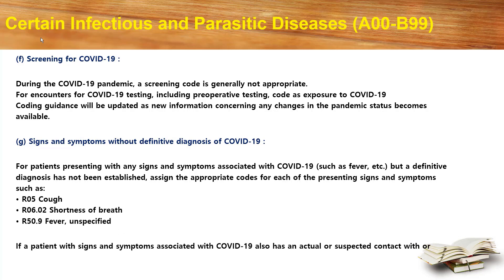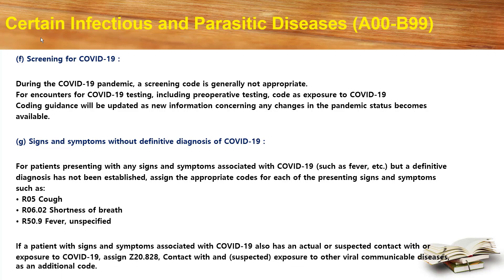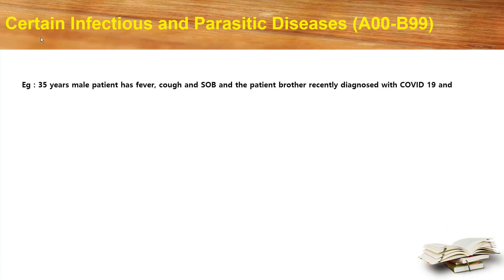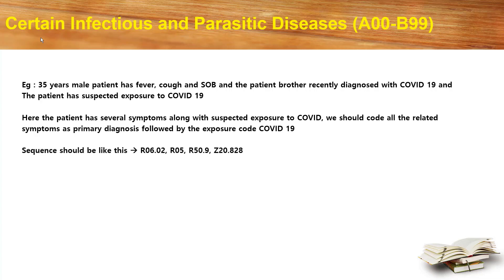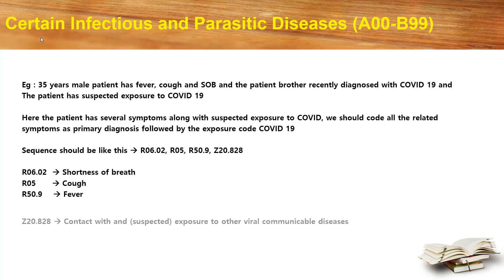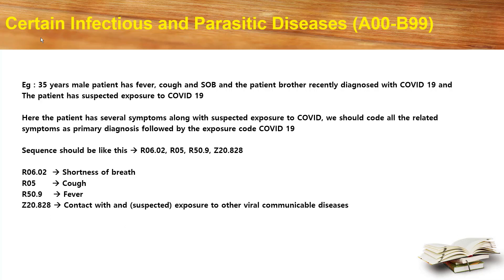If a patient has signs and symptoms associated with COVID-19 and also has actual or suspected contact with or exposure to COVID-19, assign code Z20.828 as an additional code. Example: a 35-year-old male patient has fever, cough, and shortness of breath, and the patient's brother was recently diagnosed with COVID-19, giving the patient suspected exposure to COVID-19. We should code all related symptoms as primary diagnoses followed by the exposure code. The sequence would be R06.02 (shortness of breath), R05 (cough), R50.9 (fever), and Z20.828 (contact with and suspected exposure to other viral communicable diseases).